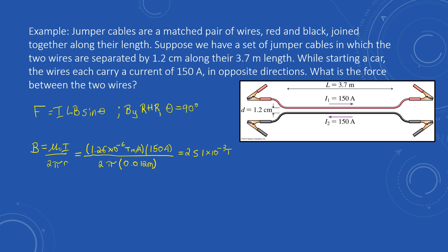At this point, we now know all components in the equation for force. Force equals ILB sine theta. The current is 150 amps, the length of the wire is 3.7 meters, the field strength we just solved for is 2.51 × 10⁻³ Tesla, and the angle is 90 degrees. Plugging all of this in, we get a final result of 1.4 newtons of force.